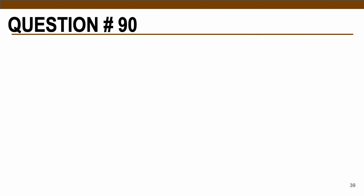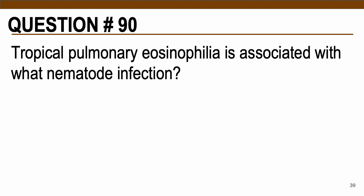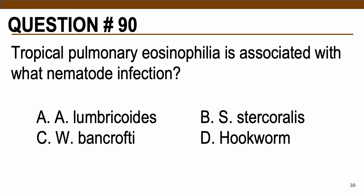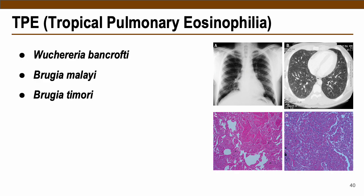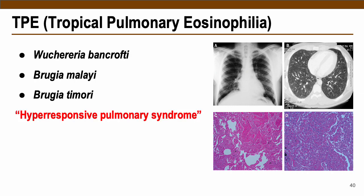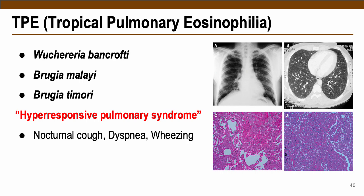Question number 90: Tropical pulmonary eosinophilia is associated with what nematode infection? The correct answer is letter C, Wuchereria bancrofti. Together with Wuchereria bancrofti and Brugia species such as malayi and timori, all of these cause tropical pulmonary eosinophilia — a hyper-responsive pulmonary syndrome in response to trapped microfilariae within the lung tissue, characterized by nocturnal cough, dyspnea, and wheezing.